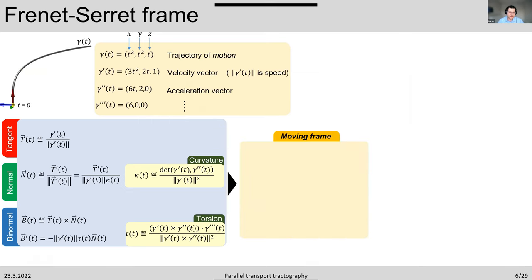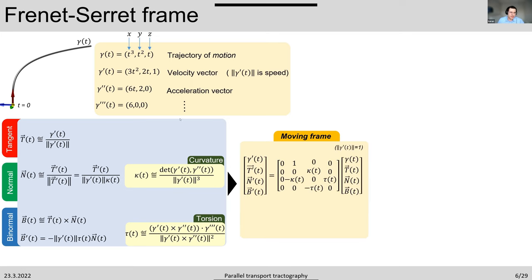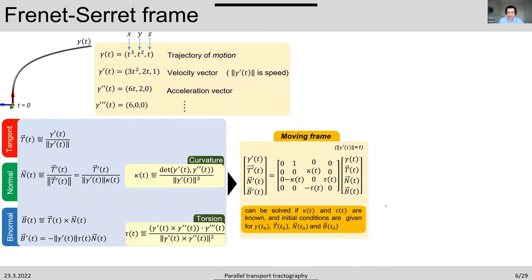If everything is local, where does the moving frame come from? When we collect all these expressions together, we actually can have a system of differential equations tying the derivative of the frame and the curve evolution with the points, the frame, curvature, and torsion. Given initial conditions and specified curvature and torsion, we can solve this — meaning the evolution of the curve only depends on curvature and torsion. This is known as the fundamental theorem of curves.